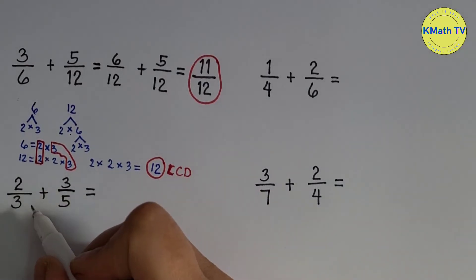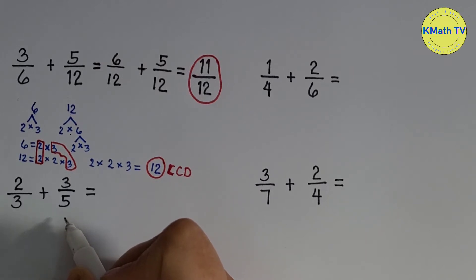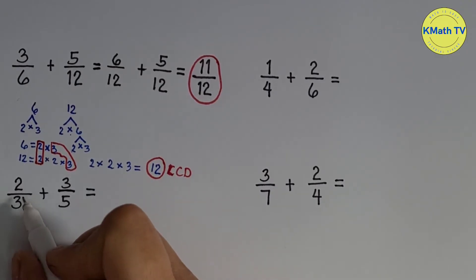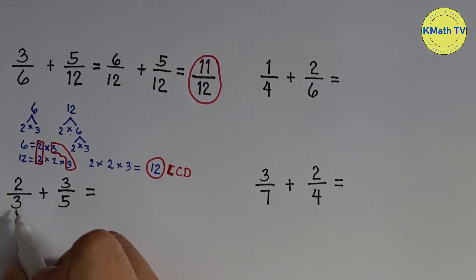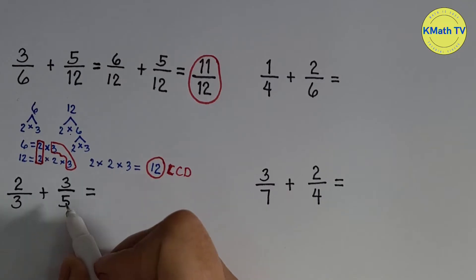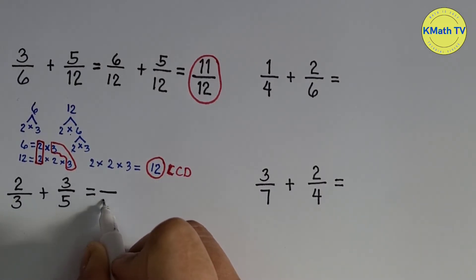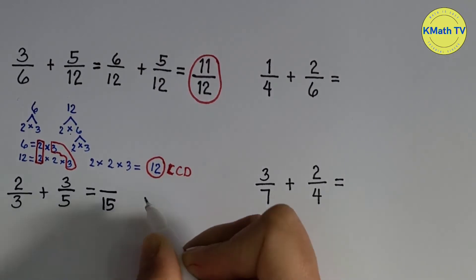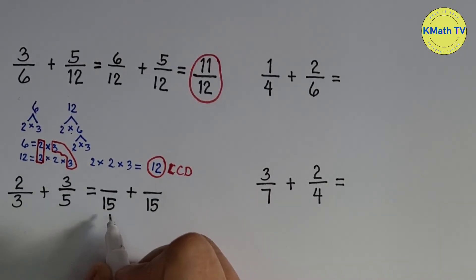Second example: 2 thirds plus 3 fifths. These are dissimilar fractions, so the first step is to get the LCD. The denominators are 3 and 5 — both prime numbers — so we can get the LCD easily by multiplying them. 3 times 5 equals 15. The LCD is 15. We just multiply the denominators 3 and 5 because they are both prime numbers.